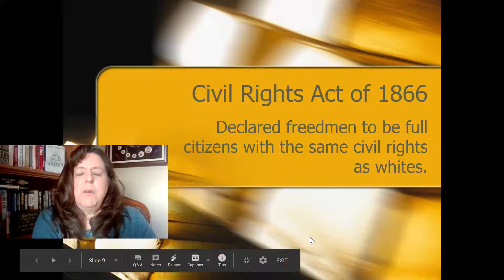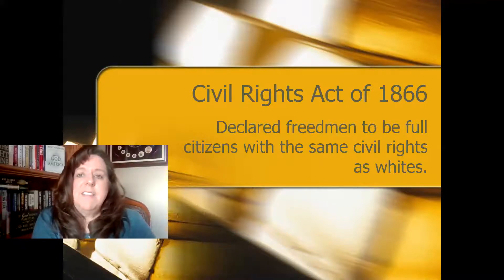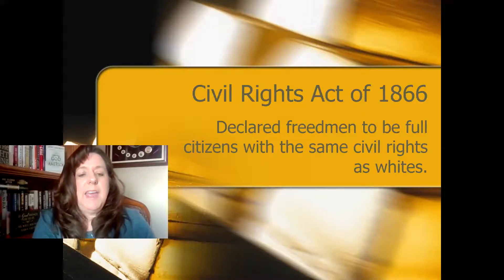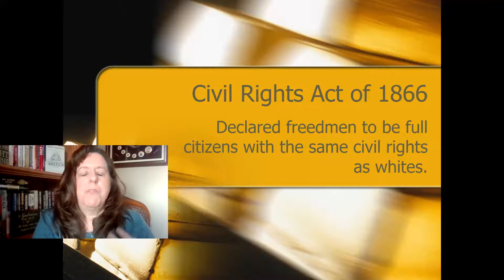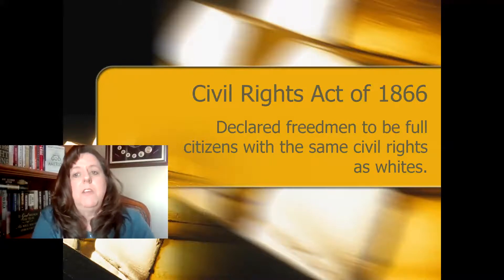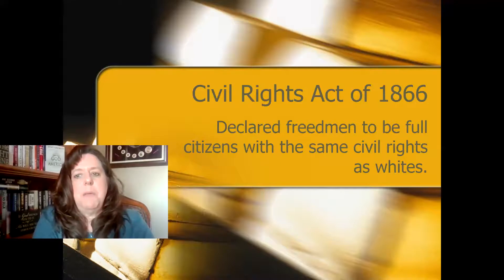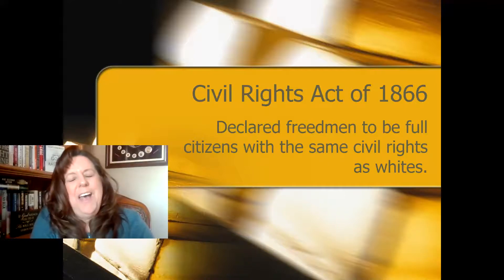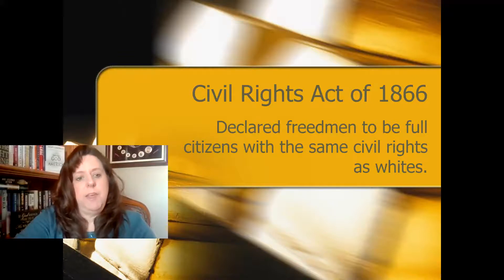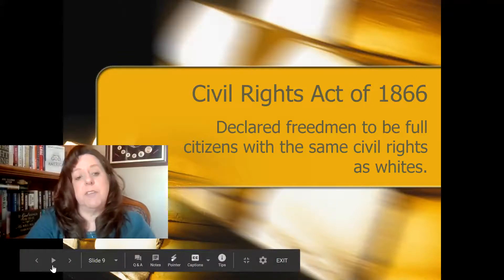Because former slaves were not being treated equally, the federal government passed the Civil Rights Act of 1866. This was trying to provide that equal protection we see in the 14th Amendment. It declares that all freedmen — all former enslaved people — are to be full citizens with the same rights as whites. This Civil Rights Act is ultimately ingrained into the Constitution through the equal protection clause of the 14th Amendment.